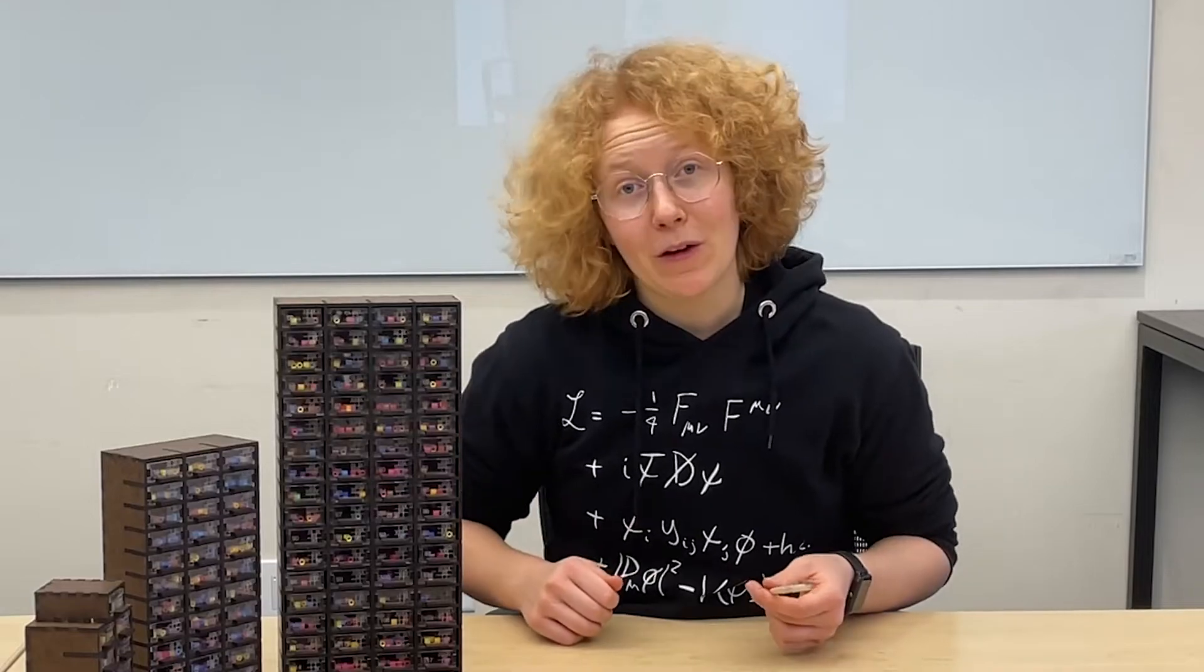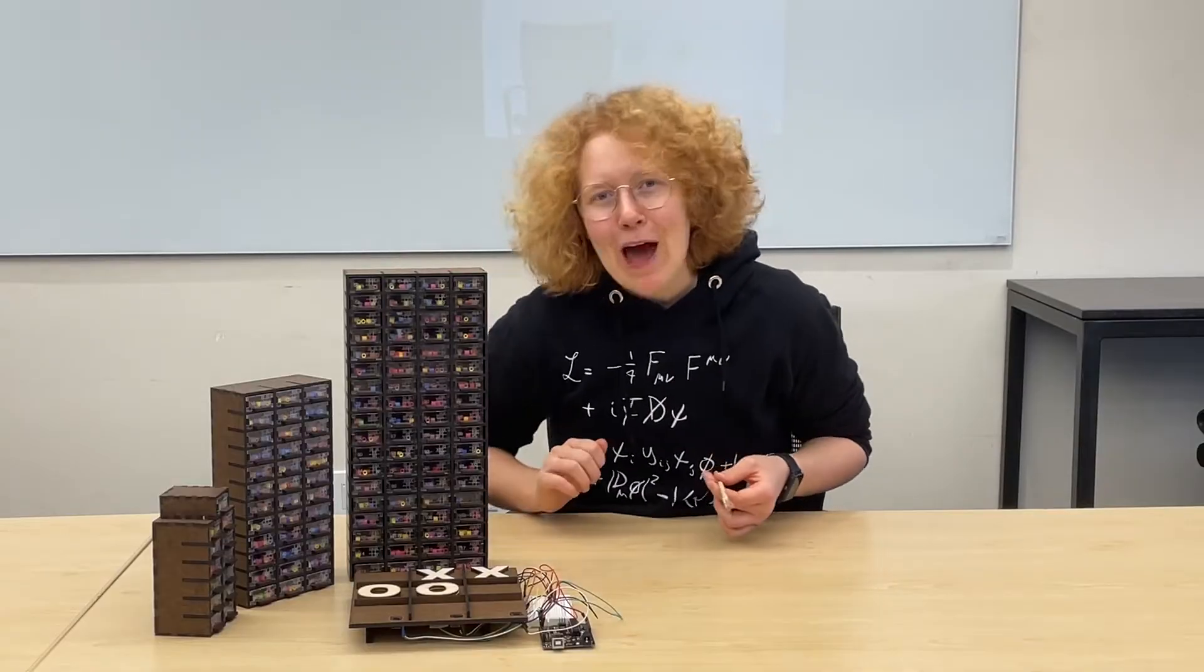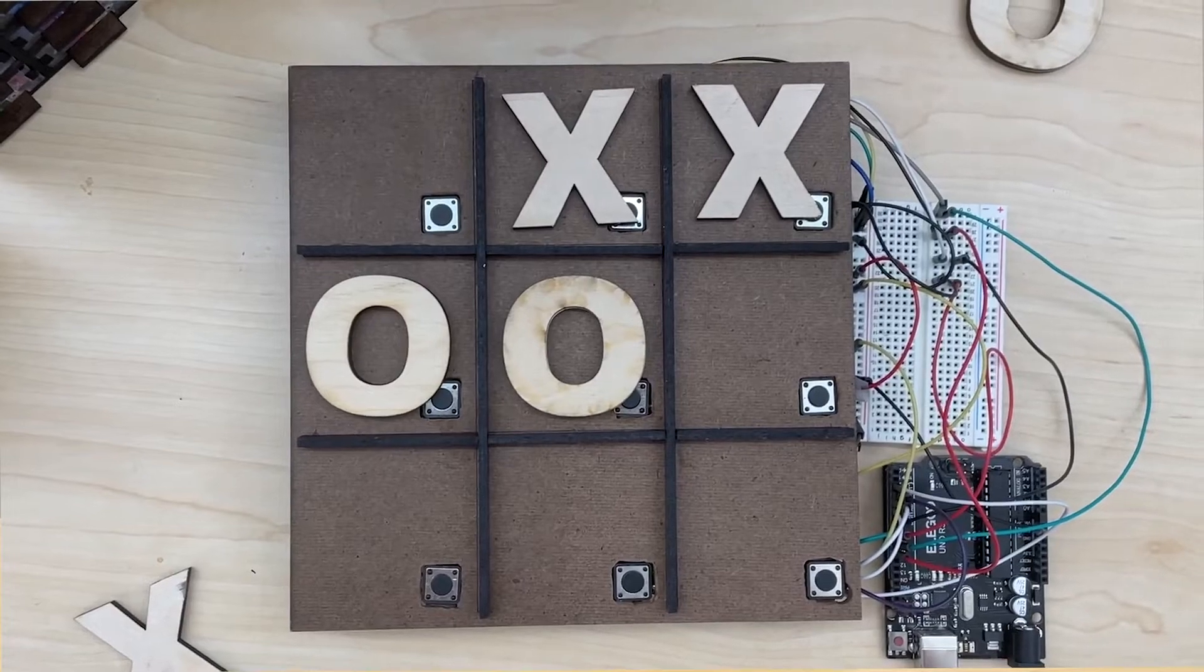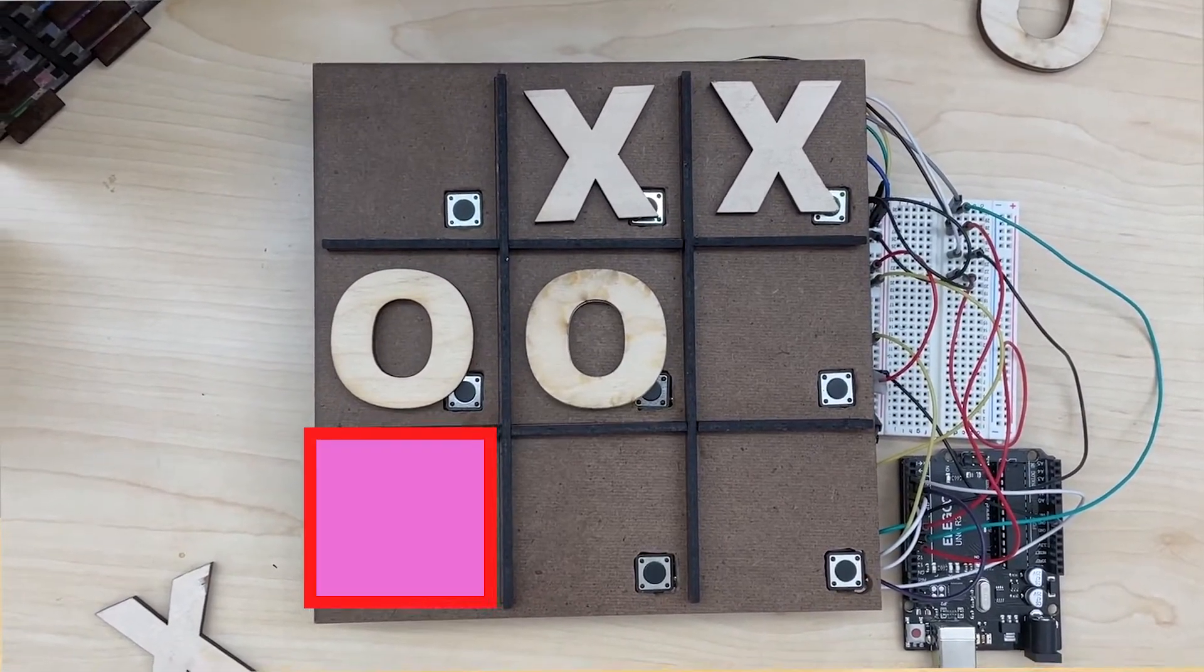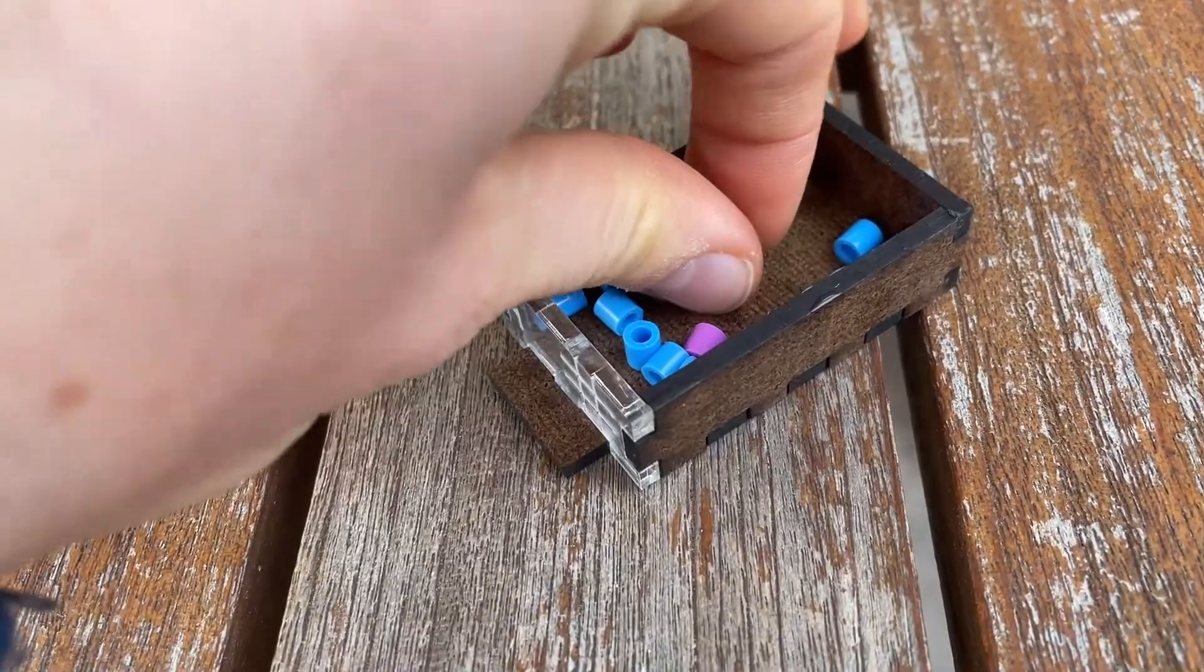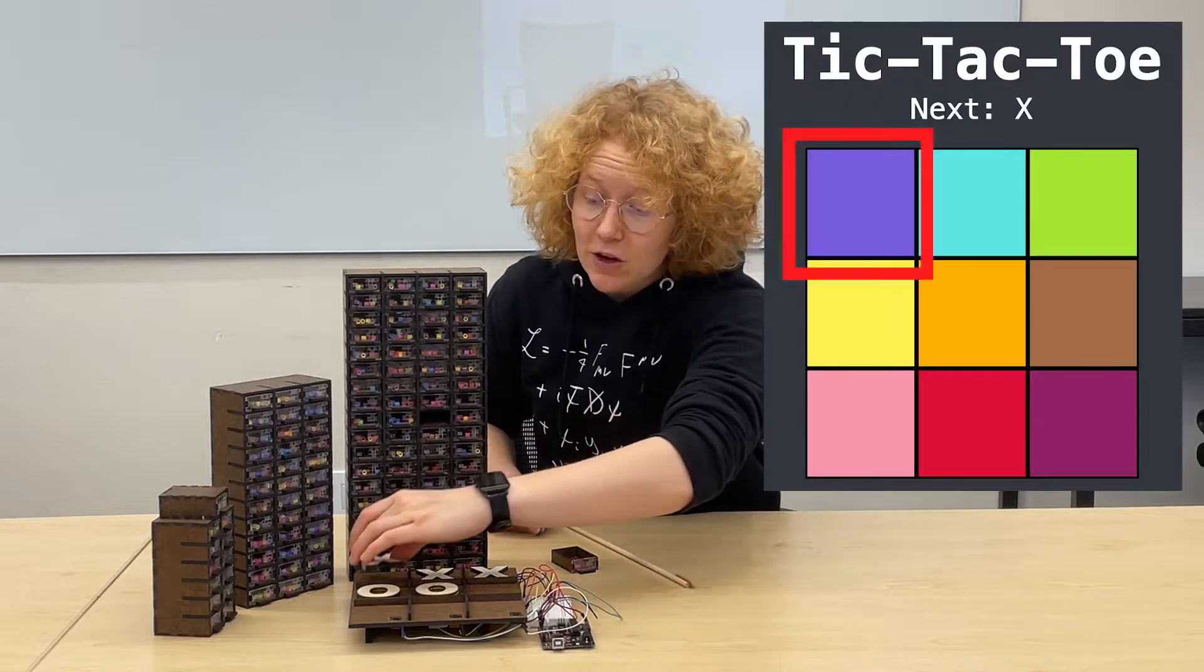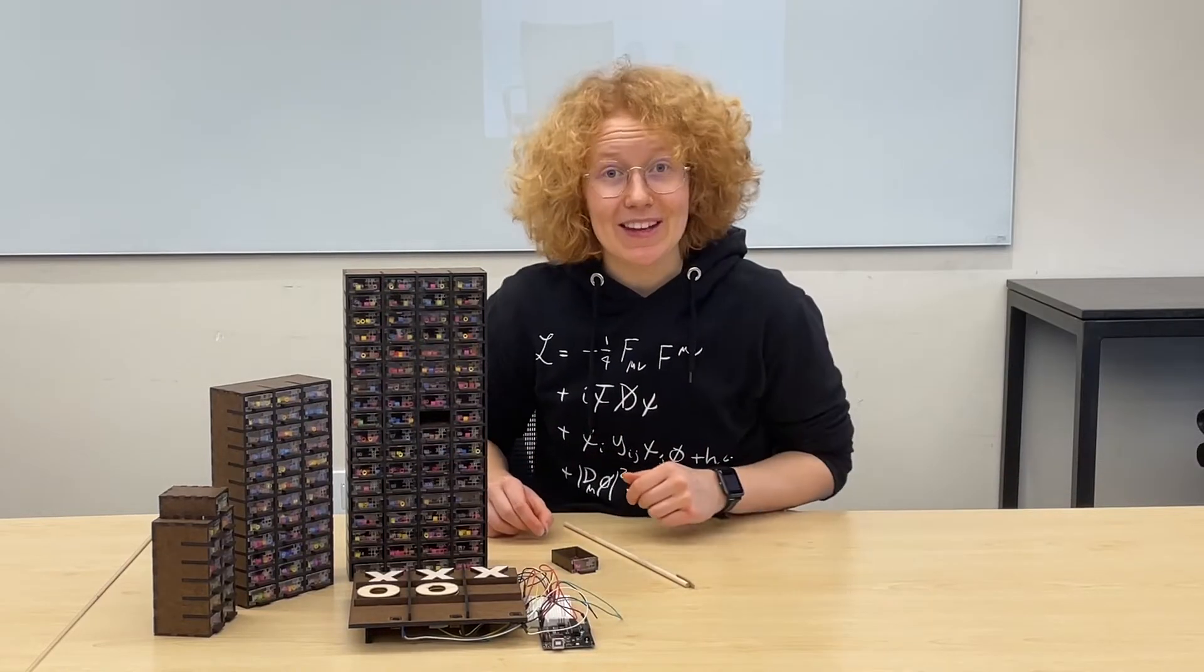Let's say that we're in the middle of the game. To allow the mechanical computer to make a move, we first represent each available square with a different colored bead, and then randomly choose a bead as its move. In this case, the mechanical computer makes its move in the top left corner, winning the game.